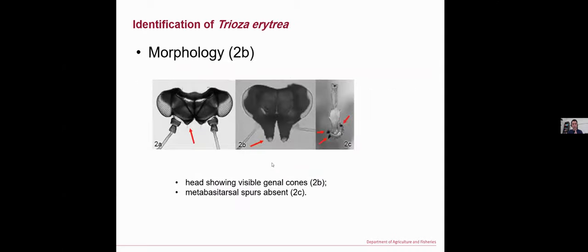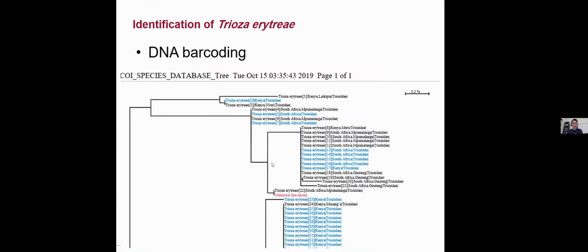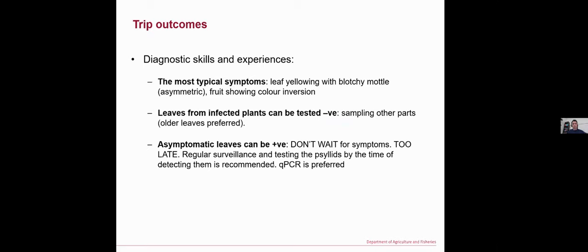We also look at the head to identify Cacopsylla originates, where the head shows visible genal cones as in picture 2B, and there are no metabasitarsus spurs on the leg. Additionally, to identify Cacopsylla, you can use DNA barcoding to sequence the COI gene. I sequenced the COI gene from a specimen, confirming that it was Cacopsylla originates.